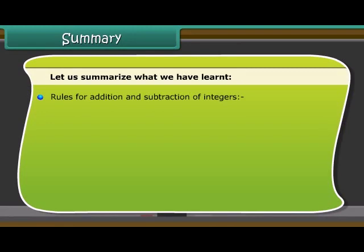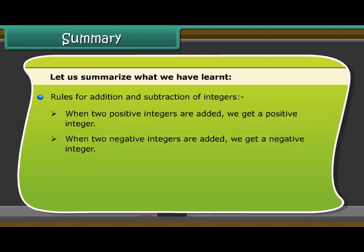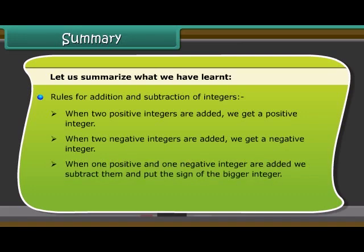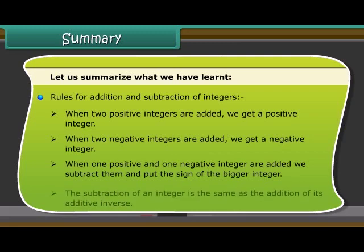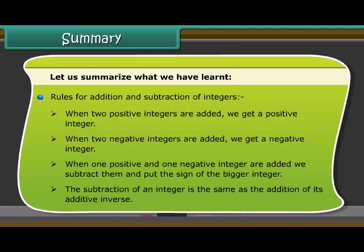Rules for addition and subtraction of integers: 1. When two positive integers are added, we get a positive integer. When two negative integers are added, we get a negative integer. When one positive and one negative integer are added, we subtract them and put the sign of the bigger integer. The subtraction of an integer is the same as the addition of its additive inverse.